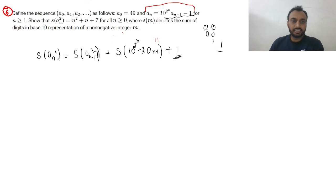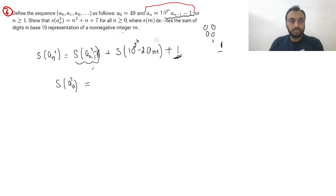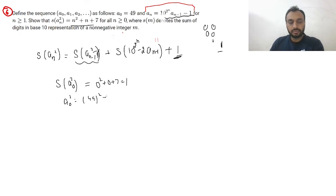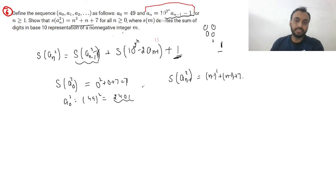We now use induction. For the base case, S(A₀²) should equal 0² + 0 + 7 = 7. Indeed, A₀² = 49² = 2401, and the sum of digits is 2 + 4 + 0 + 1 = 7. ✓ We then assume S(Aₙ₋₁²) = (n−1)² + (n−1) + 7 is true, and aim to prove S(Aₙ²) = n² + n + 7.